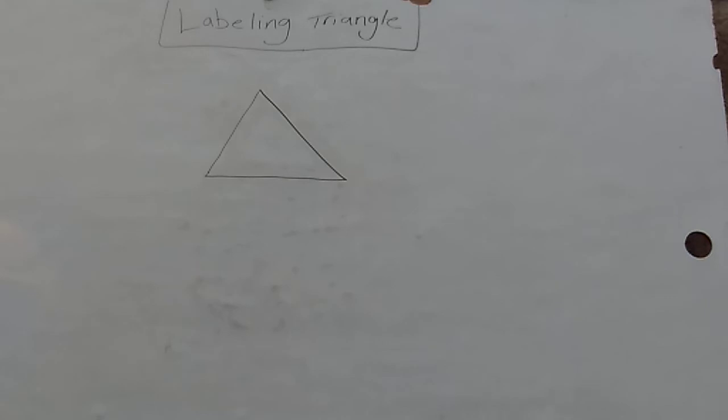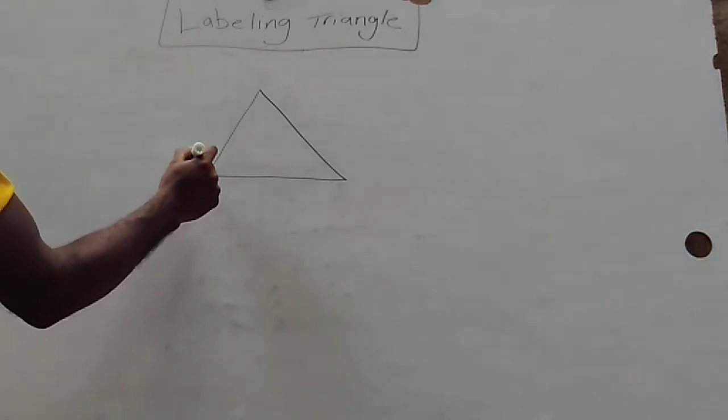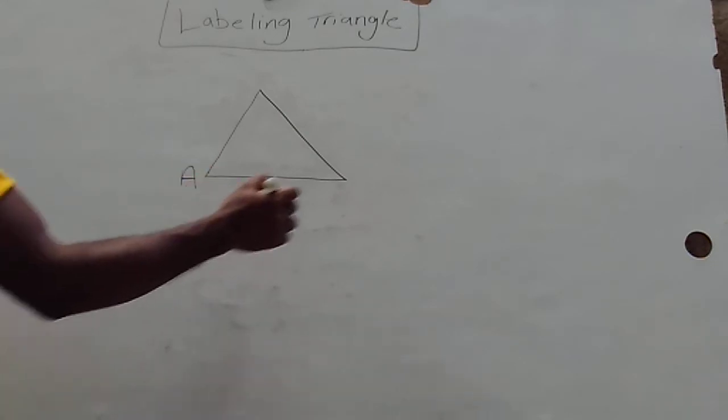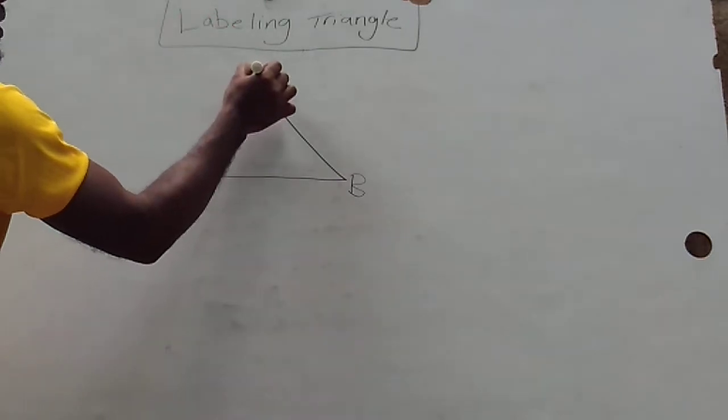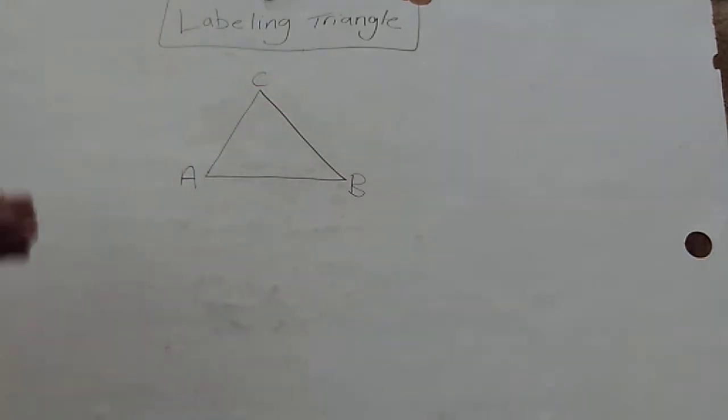The letters I'll use to label this triangle are A, B, and C. For this vertex I'll use uppercase A, for this vertex uppercase B, and for this vertex uppercase C. The side opposite to each vertex would be the lowercase of the letter at the vertex.